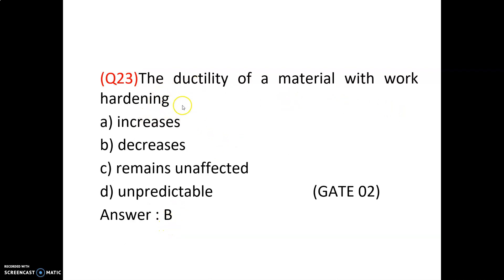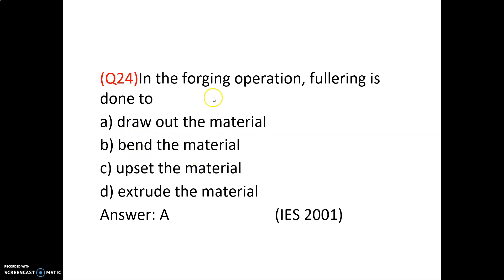The ductility of a material decreases with work hardening. Because of cold working, hardness increases — and as hardness increases, ductility decreases. So option B is correct. In forging operations, fullering is done to draw out (elongate) the metal and decrease its diameter, while upsetting is done to increase the diameter of the material.